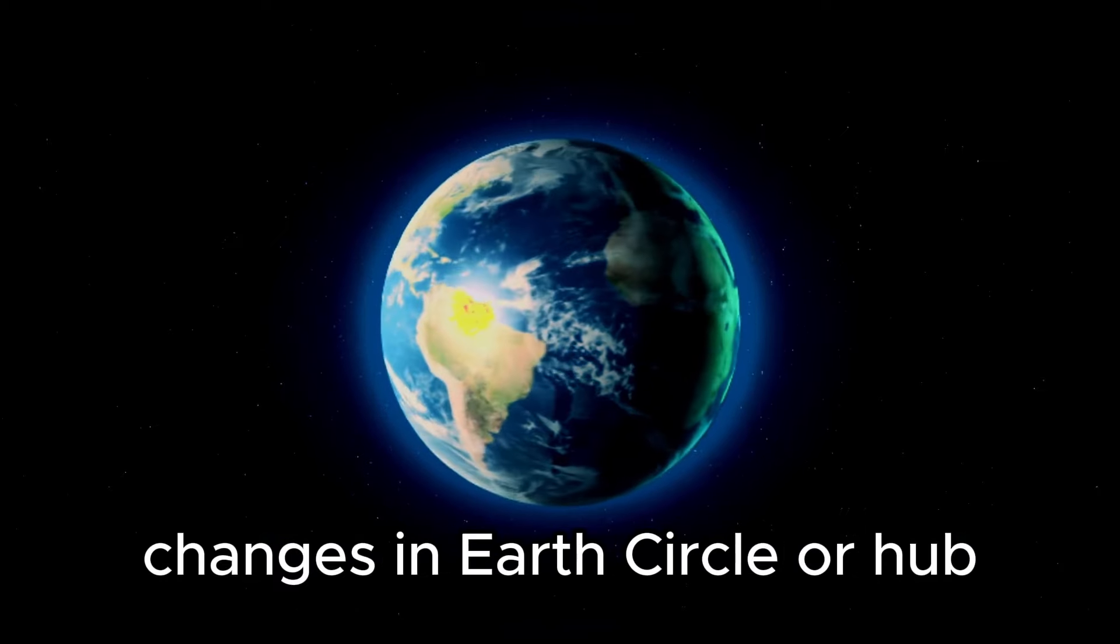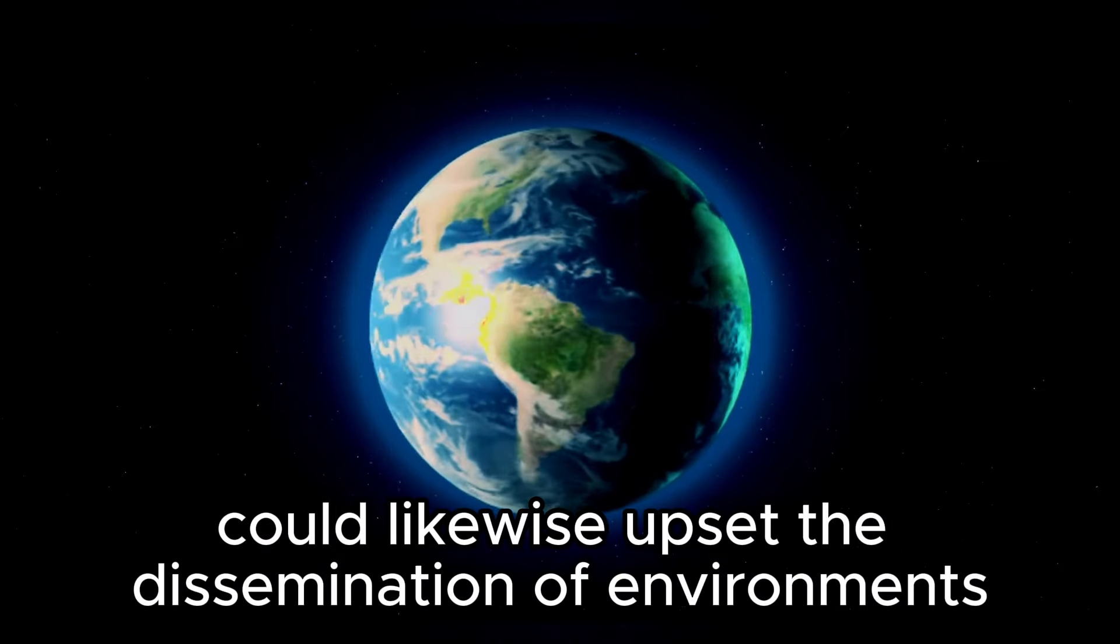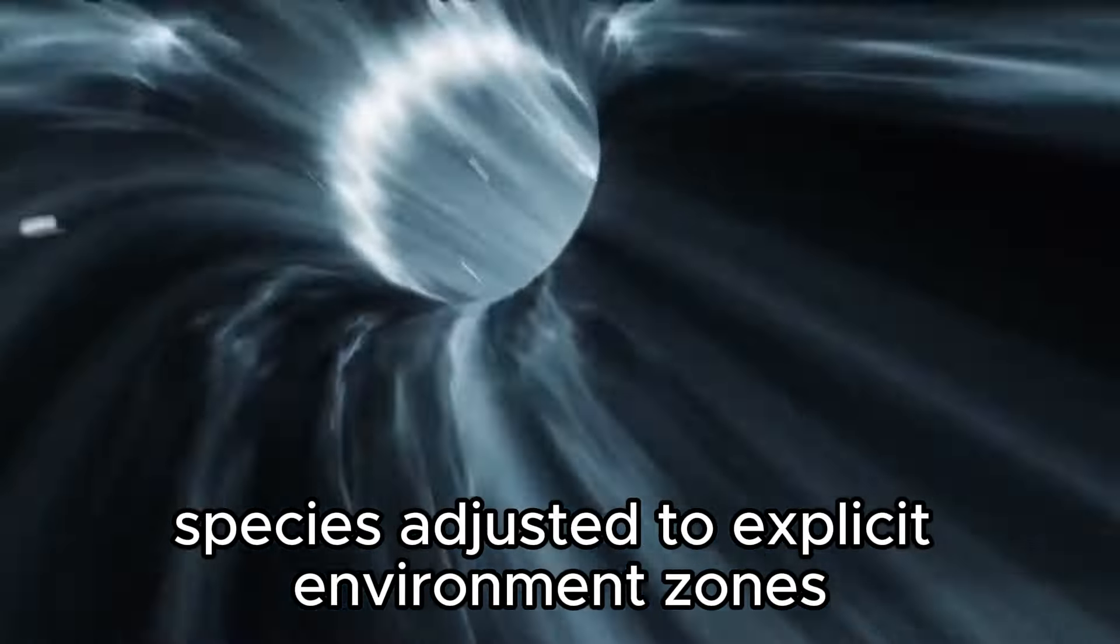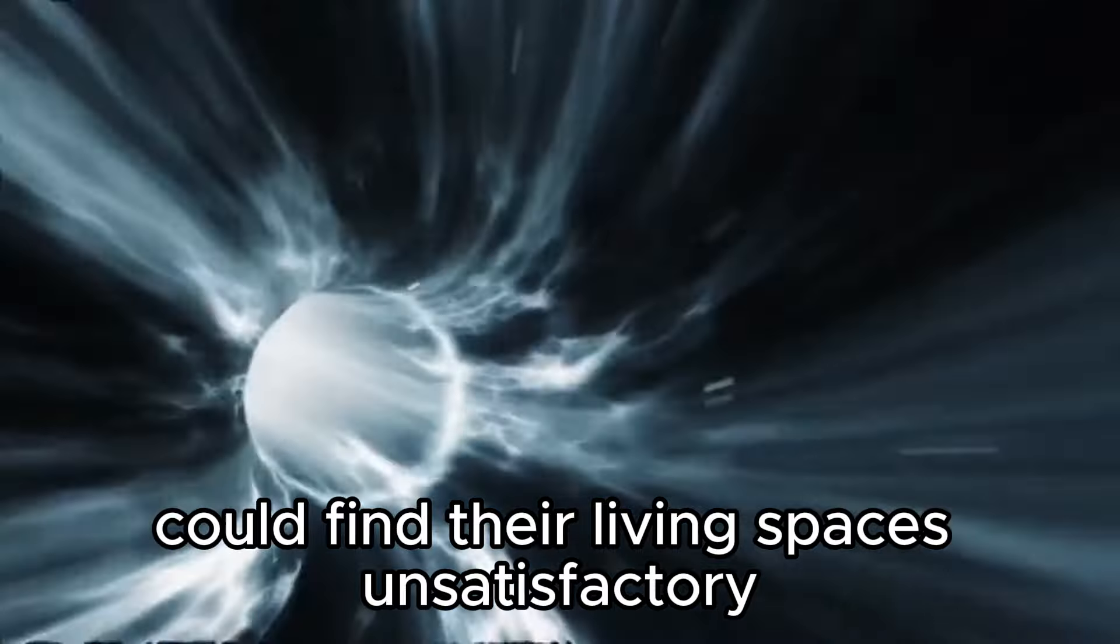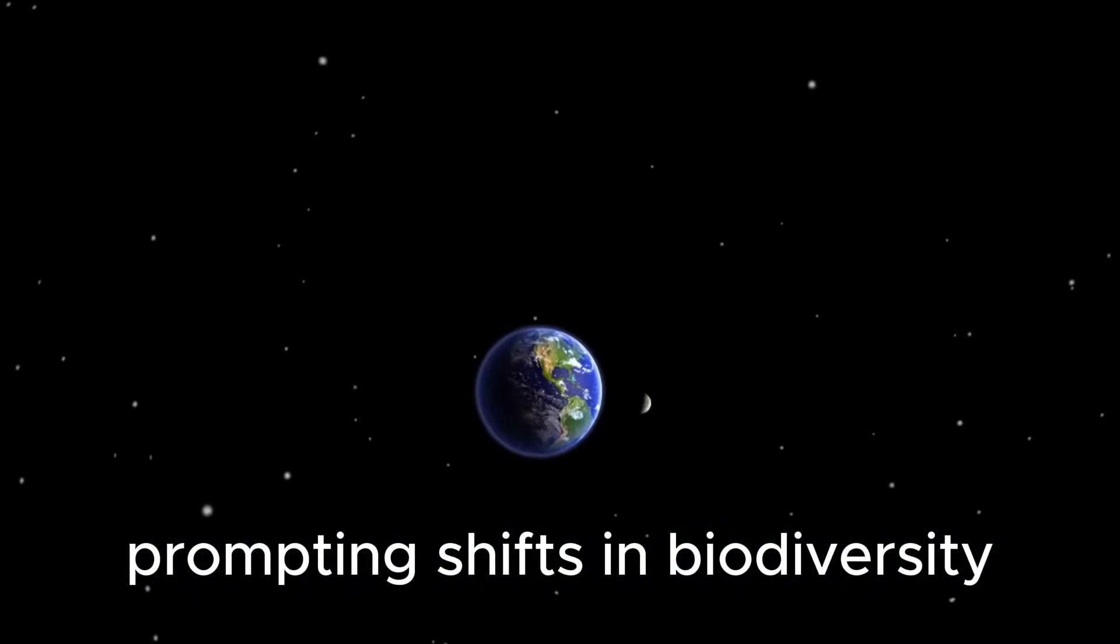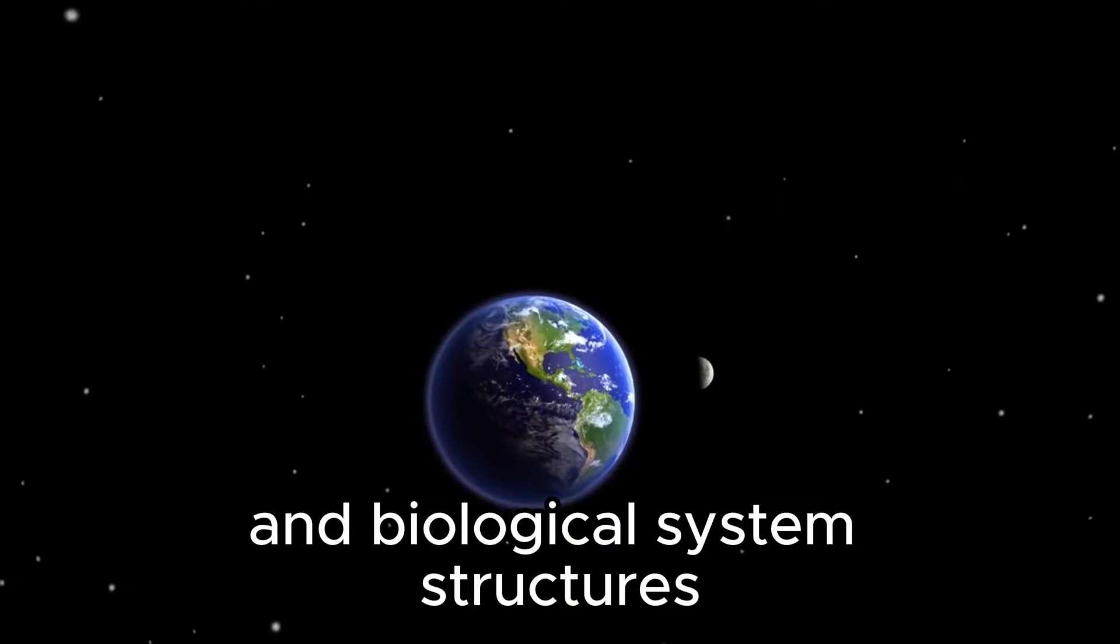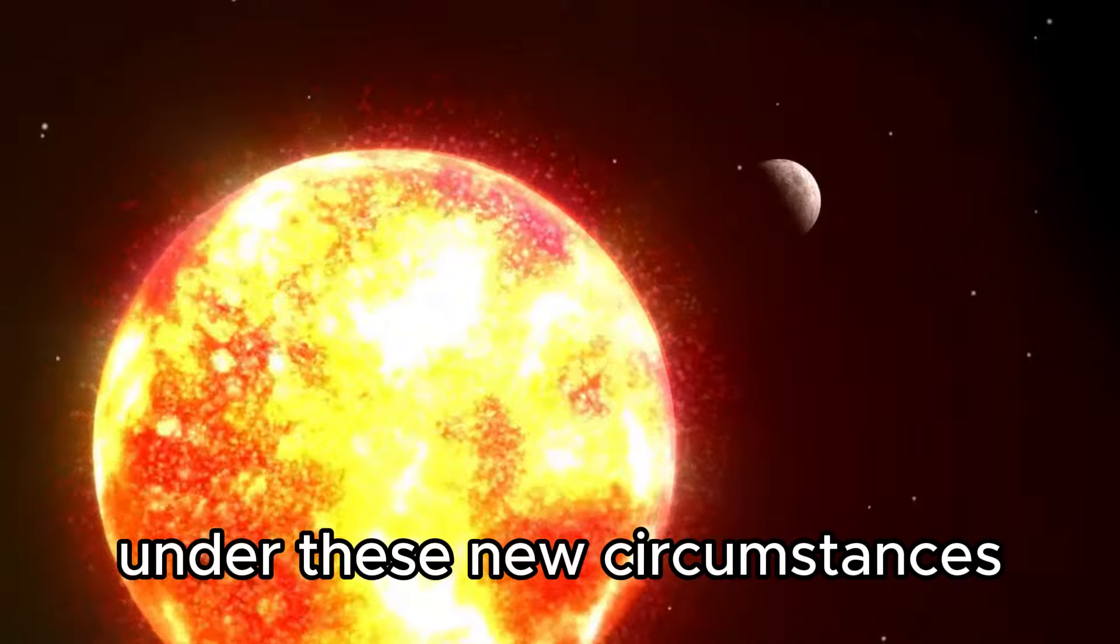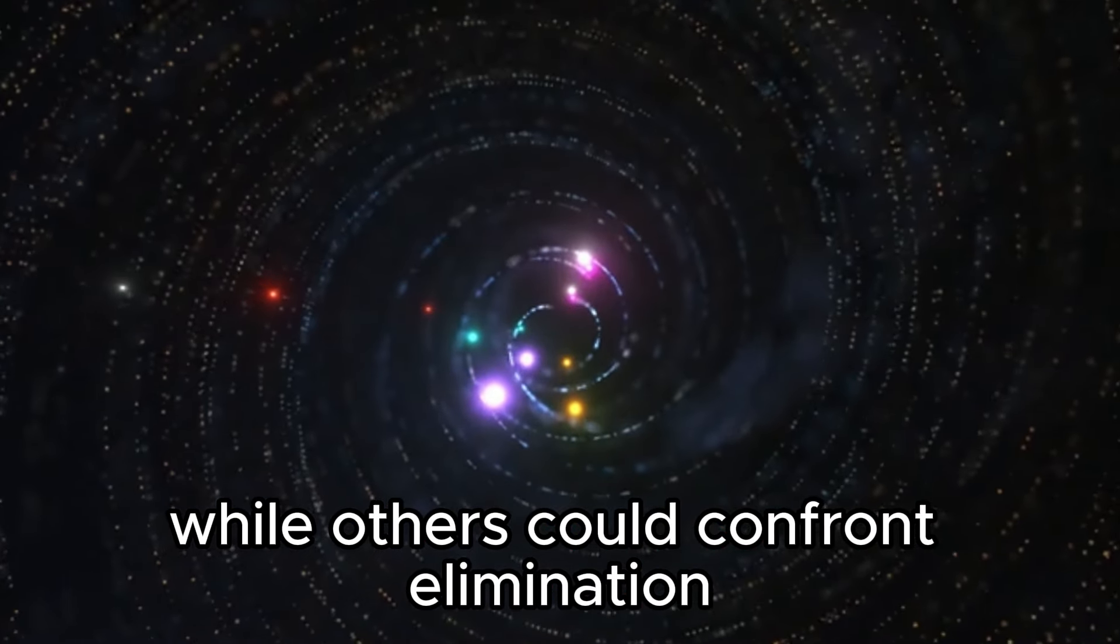Changes in Earth's circle or hub could likewise upset the dissemination of environments across the globe. Species adjusted to explicit environment zones could find their living spaces unsatisfactory, prompting shifts in biodiversity and biological system structures. A few animal groups could flourish under these new circumstances, while others could confront elimination.